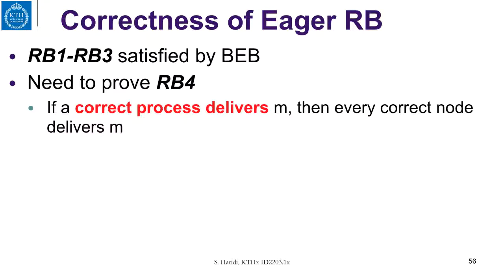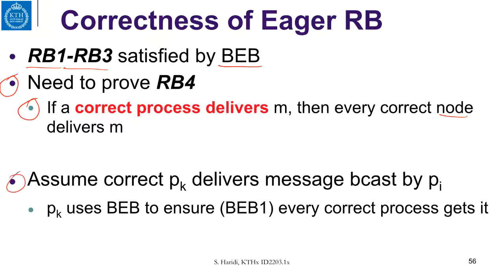Let us look at the correctness of this algorithm. For the reliable broadcast properties — validity, no duplication, no creation — these are satisfied by the best-effort broadcast. We only need to prove the agreement property, which says: if a correct process delivers a message M, then every correct process delivers message M. Assume a correct process PK delivered message M that was broadcast by PI. PK immediately does a rebroadcast, and since PK is correct, the rebroadcast validity property ensures that every correct process gets the message M.